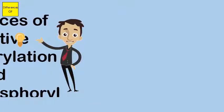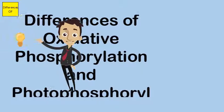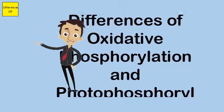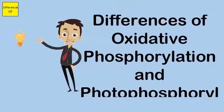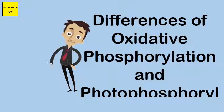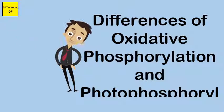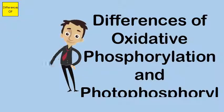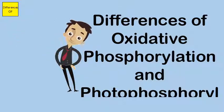Difference between Oxidative Phosphorylation and Photophosphorylation. Oxidative phosphorylation occurs during respiration, whereas photophosphorylation occurs during photosynthesis.